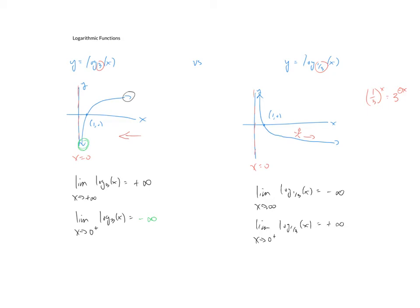So in summary, keep in mind it's very subtle and it's not always the most obvious because we're not plotting points, but when that base is bigger than one then f is an increasing function. When that base a is between zero and one we have a decreasing function.